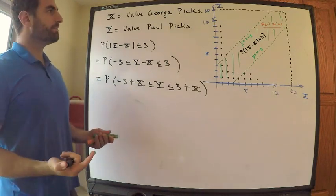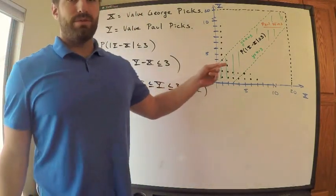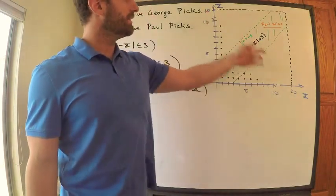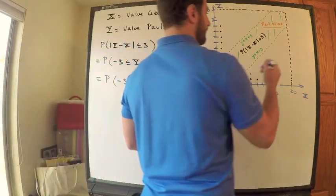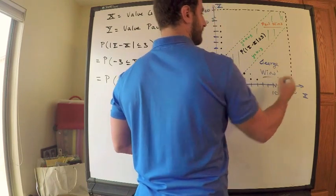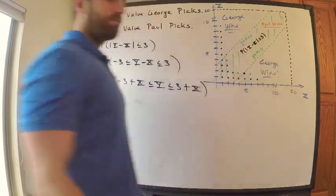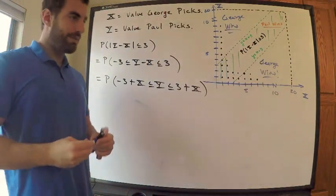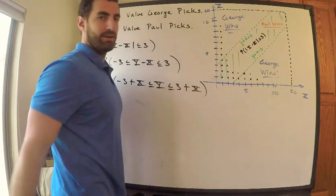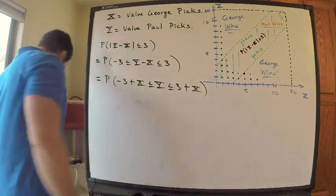But alternatively, what I'm going to do is I'm going to find the desired probability by computing the probability I land in the outside. This is where George wins. George wins here and George wins here. This is where George wins, and where George wins. I'm going to compute where George wins and then do 1 minus that. But wait, there's symmetry because this region, the area here, is exactly the same area as there. I'm only going to compute one of these. It's going to be even easier.